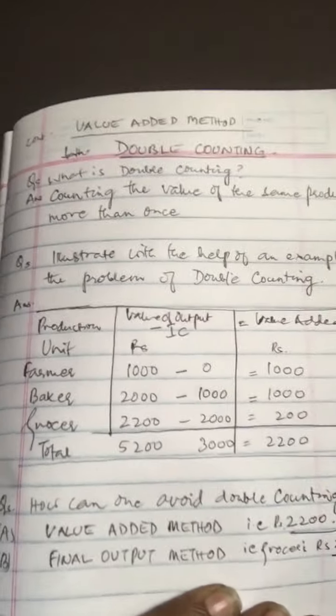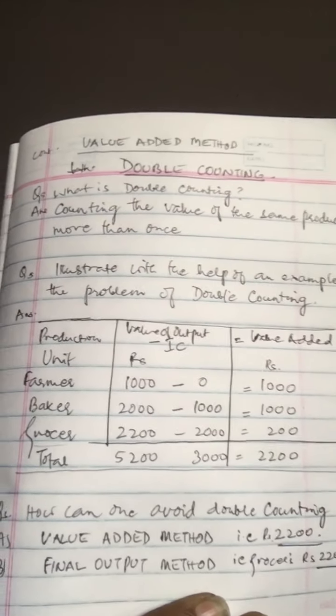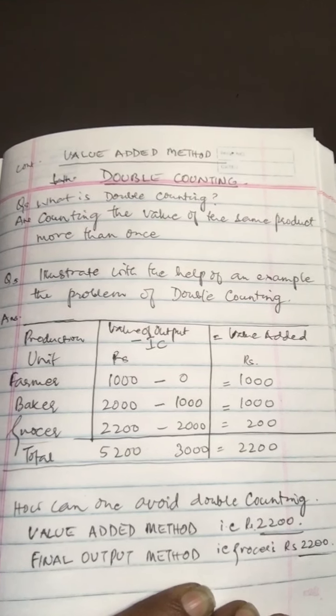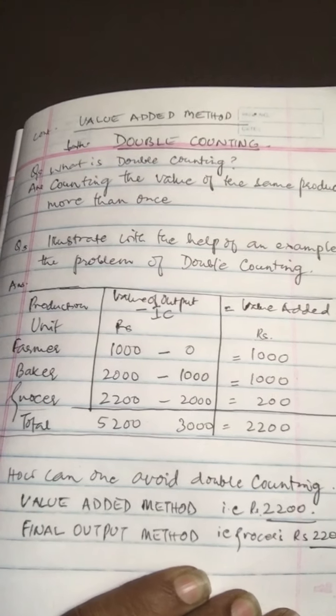This has been explained with the help of a farmer producing wheat, then selling it to the miller, then to the baker, and to the shopkeeper. With this small illustration I'm going to help you understand this concept.